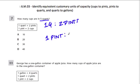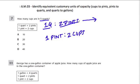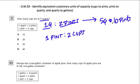And for every one pint, we have two cups. So here we have five quarts. If we rewrote everything in terms of five quarts — one quart is two pints, so five quarts will be five times more pints: ten pints. For every one quart there are two pints, so if we have five quarts, we should have ten pints.